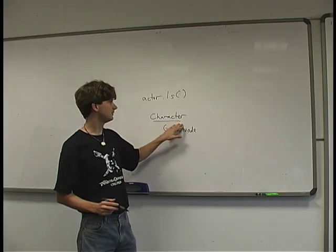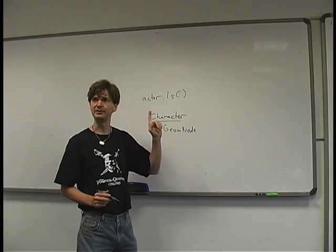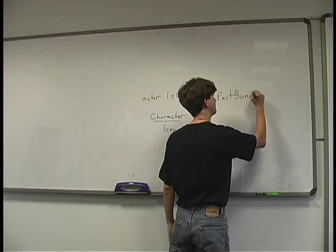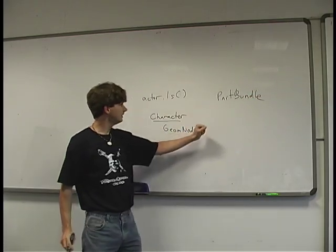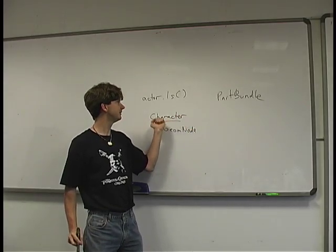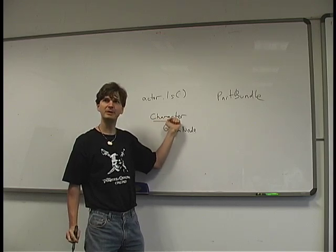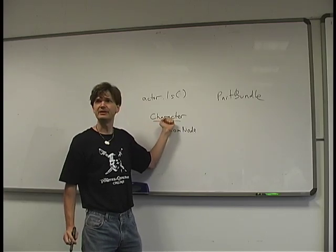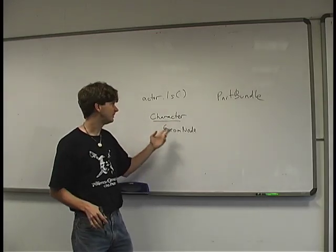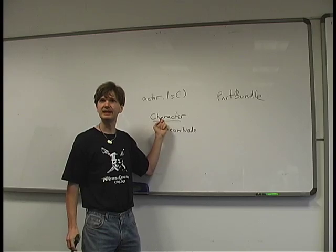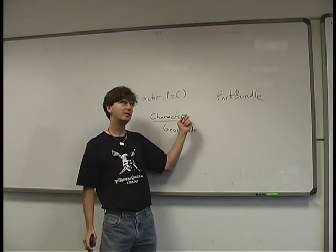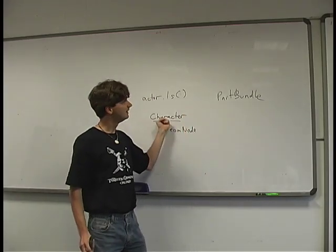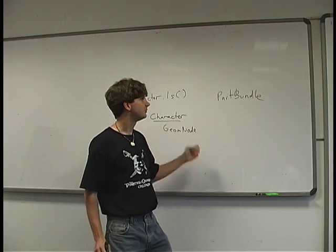Inside a character, there is at least a PartBundle — that's the root of the joint hierarchy. A Character inherits from PandaNode by way of a subclass called PartBundleNode. A Character basically is a PandaNode that can contain PartBundles. You can call character.getBundle(), and typically there's only one. The PartBundle is the root of the joint hierarchy. You can traverse it similarly to how you traverse the node hierarchy using getNumChildren() and getChild(i), though it's not a PandaNode itself — it's stored inside the Character, much like a Geom is stored inside a GeomNode.